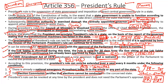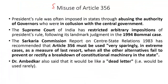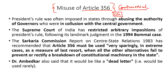President's rule can be revoked at any point of time by the President acting under the aid and advice of the Union Council of Ministers headed by the Prime Minister, and there is no need for parliamentary approval for revoking President's rule. The imposition of President's rule under Article 356 has always been controversial because of its frequent misuse and abuse by the party in power at the central government.